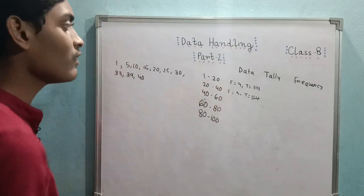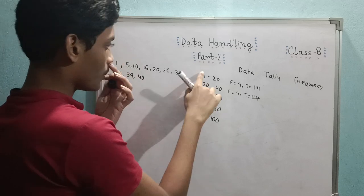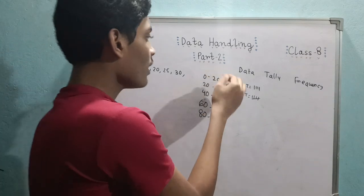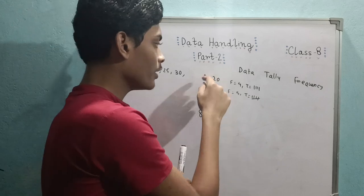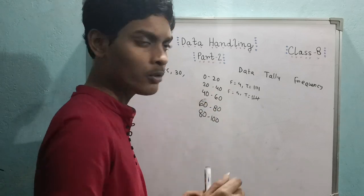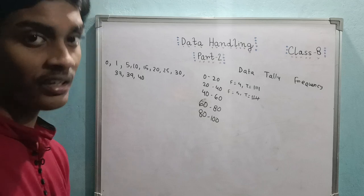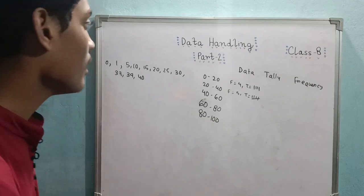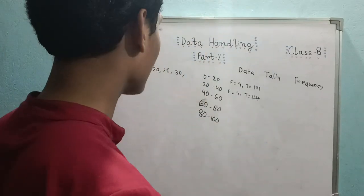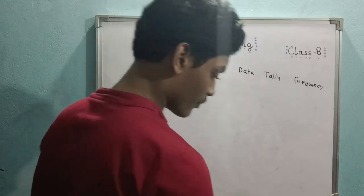Always remember: the width of every class interval must be the same. To calculate the width, do upper limit minus lower limit. In the example with class intervals 0–20, 20–40, 40–60, 60–80, 80–100, each has a width of 20. All class interval widths must be equal. Now let's apply this in actual questions.